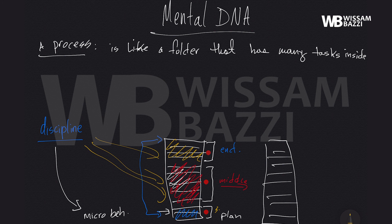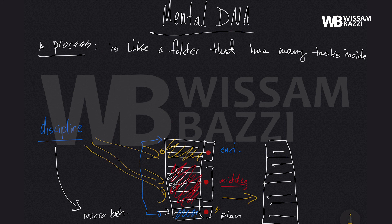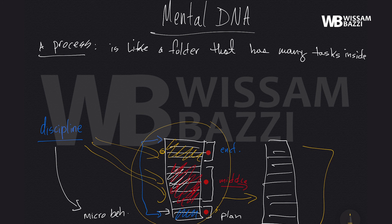If you don't plan enough, you need the discipline to sit down and give yourself enough time to plan. In the middle of a process, you need the discipline to not get distracted, stay on task, stay focused, and not jump to other processes. And at the end of a process, you also need discipline. Discipline is needed at all three levels. When you build complete processes with discipline, after running them for a while, it becomes a habit.